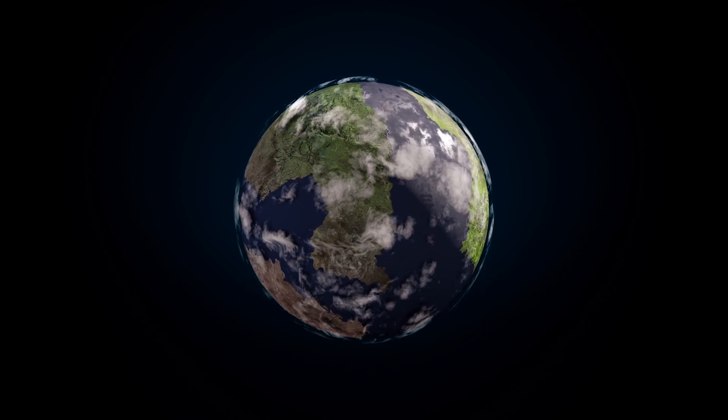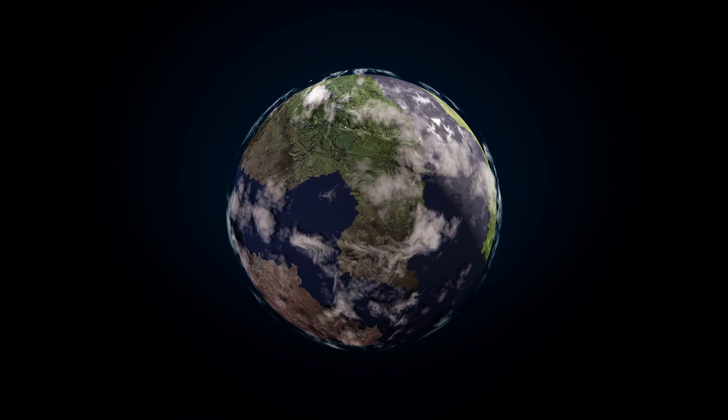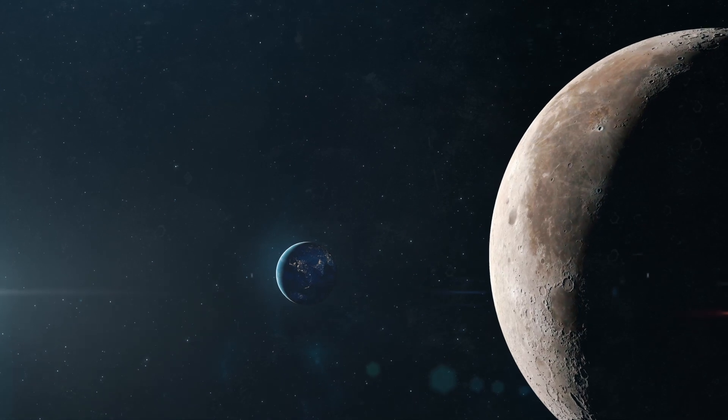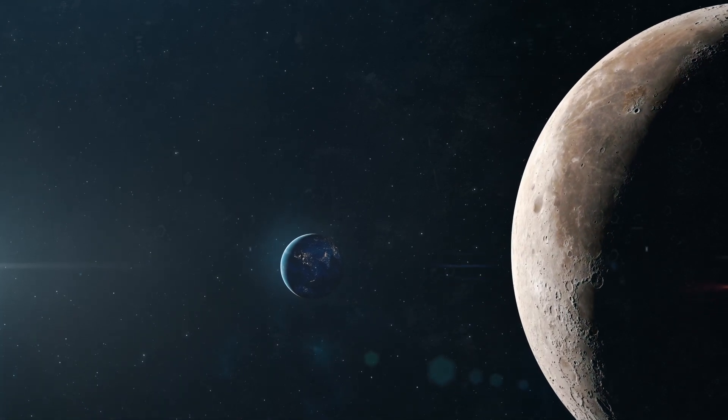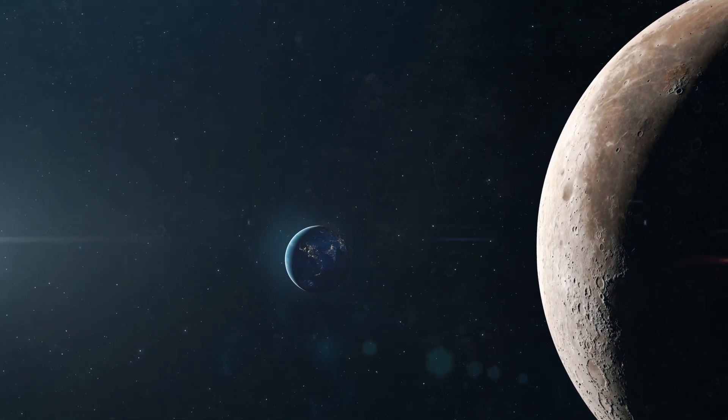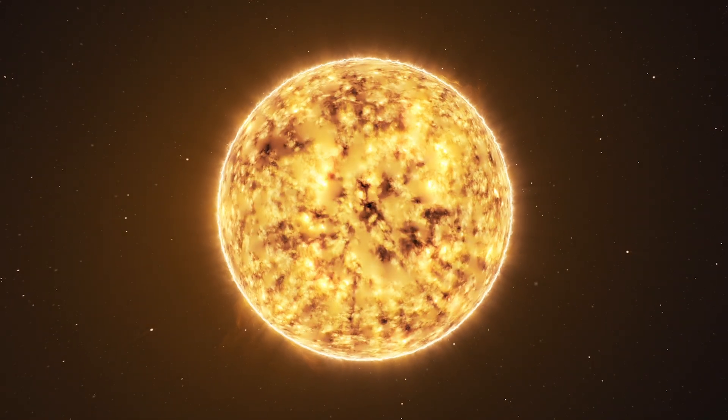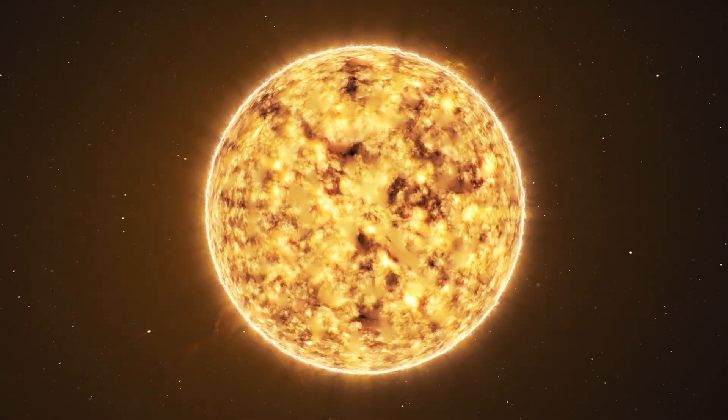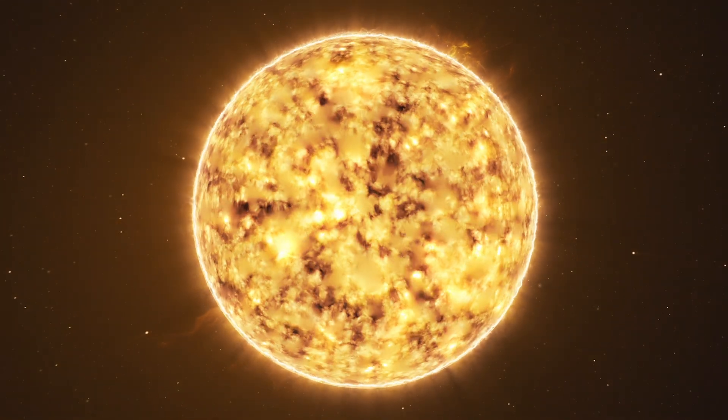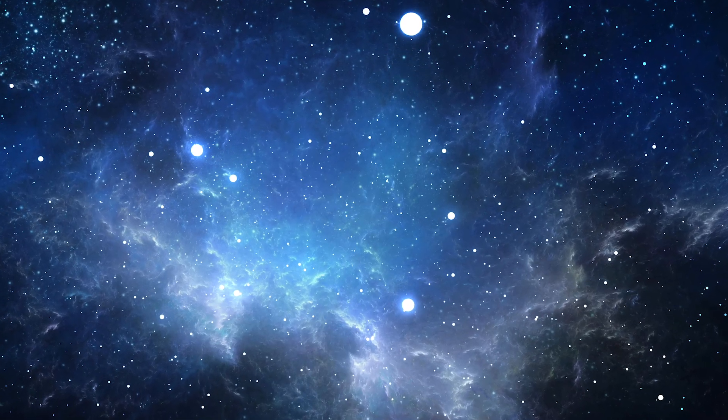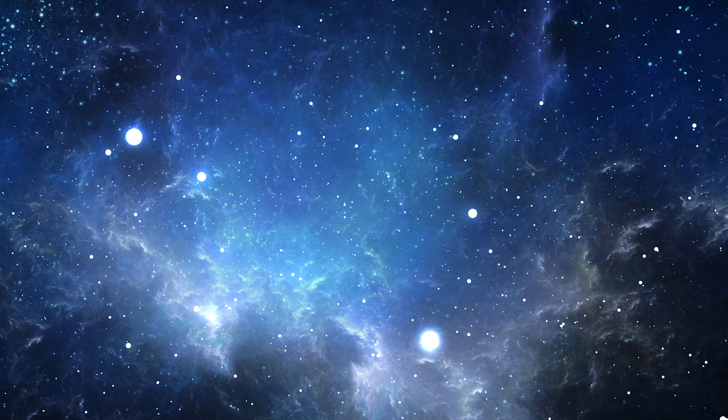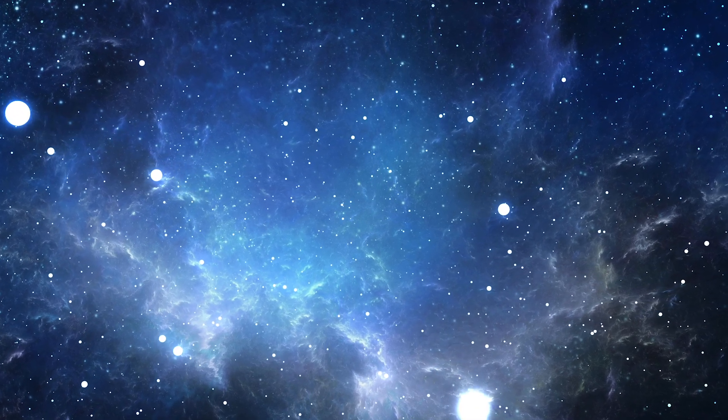Have you ever stopped to think that absolutely everything in the universe is spinning? The moon orbits the earth. The earth spins on its own axis while simultaneously orbiting the Sun. The Sun itself is spinning, tracing a path around the center of our galaxy, the Milky Way. The Milky Way also orbits the gravitational center of the so-called local group, a cluster of over 50 galaxies.